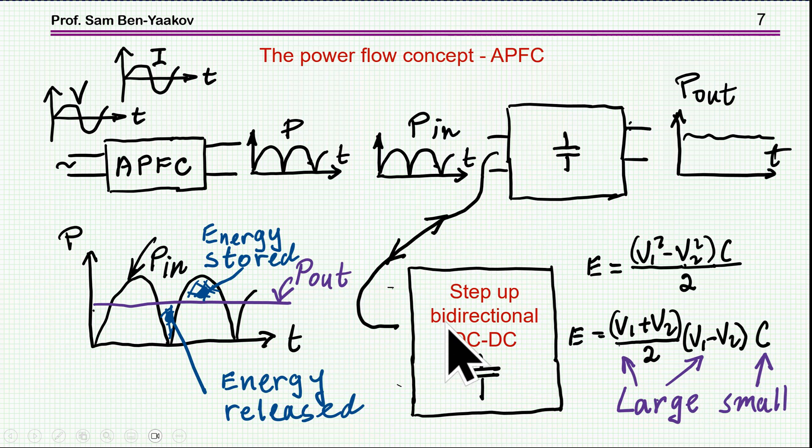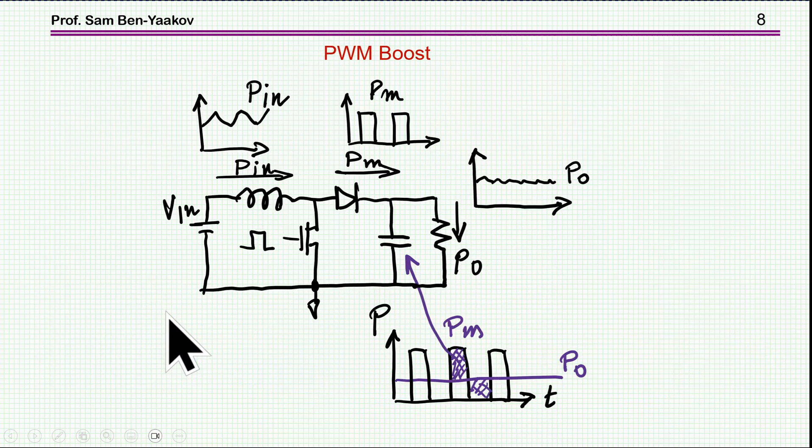The idea is to store energy when you have access and release it when you need it because the input is not supplying it. Same idea can be applied to PWM converters. Same concept of power flow. For example, here is the boost converter. The current in the inductor is sort of a DC plus ripple. So the power coming in here is pulsating and then, due to the operation of the switch, actually, it's coming out as pulses. The power coming out as pulses while we need a constant power. So, again, we need a capacitor to store the energy when there is access and then to release it when we don't have it coming from the input.